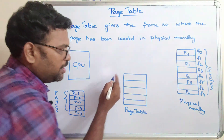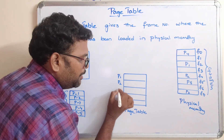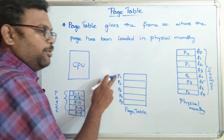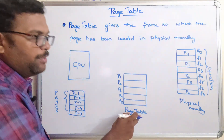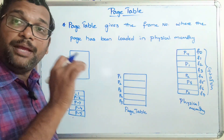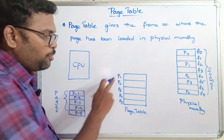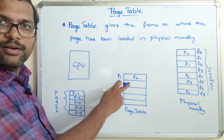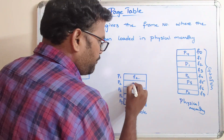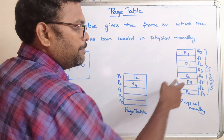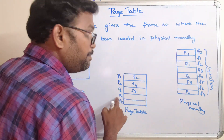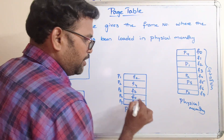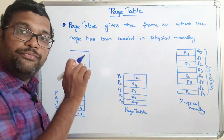In the page table, there are entries for each page with the corresponding frame numbers. P1 is loaded in frame F2, P2 is loaded in frame F4, P3 is in frame F7, P4 is in frame F0, and P5 is in frame F5. Not only the frame number — there are also some optional bits which may include permissions. So apart from the frame number, there will be a lot of options available in each entry of the page table.